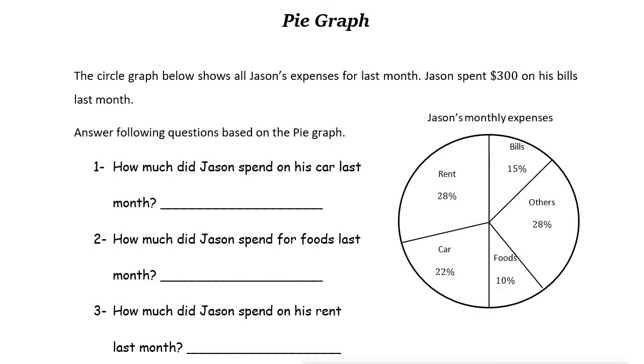A pie graph or pie chart is a circle chart divided into sectors. Let's look at this example. This is a pie graph and it's divided into different sectors.